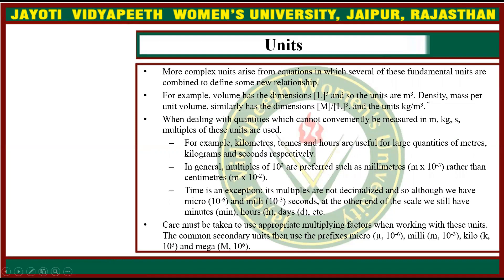More complex units arise from equations in which several of these fundamental units are combined to define some new relationship. For example, volume has the dimension L cubed and so the units are meter cubed. Density is mass per unit volume, which has the dimensions M divided by L cubed, and the units are kg per meter cubed.